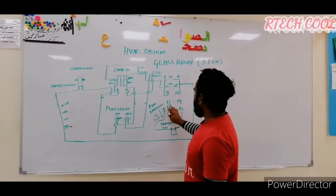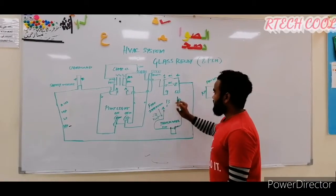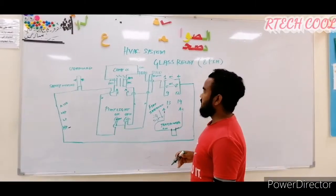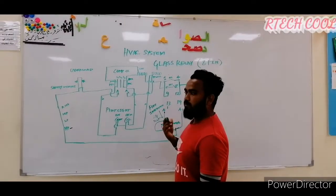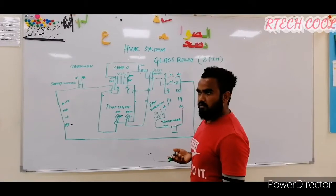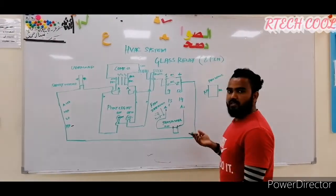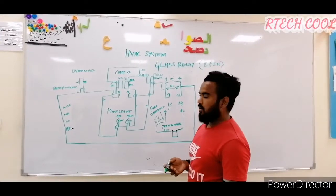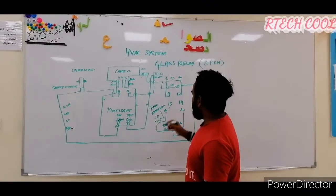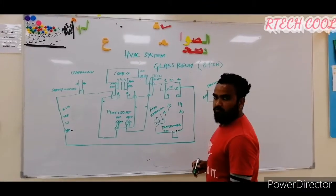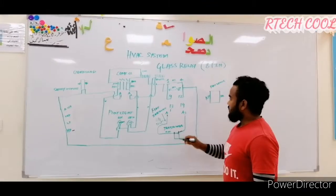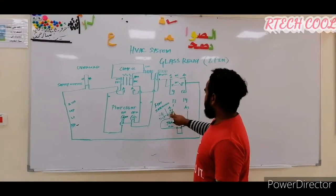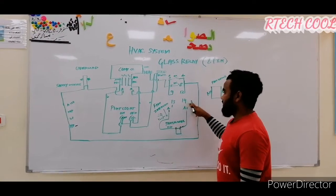Points 13 and 14 are the coil voltage terminals. There is a coil in every relay. It may be 24V or 240V — different types of relays. Here we are using a 24-volt relay. Point 13 is A1 and point 14 is A2.